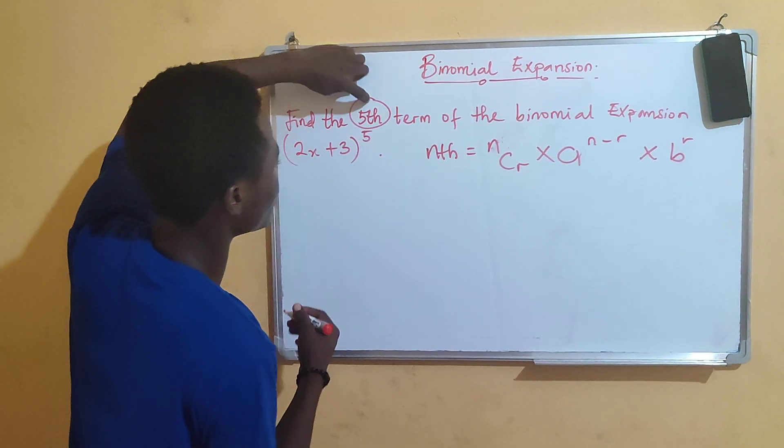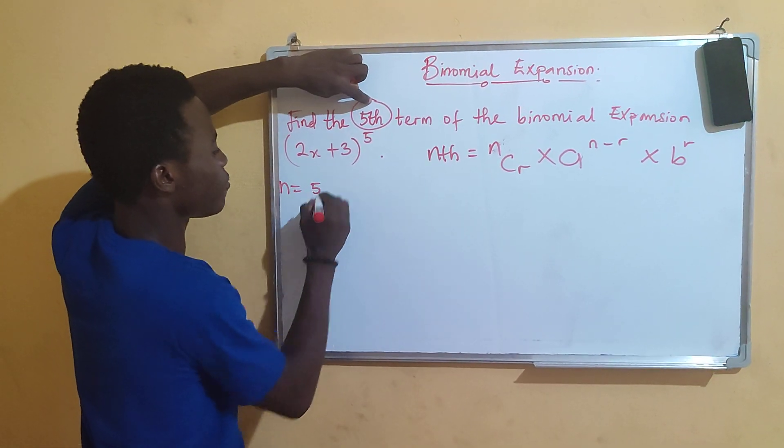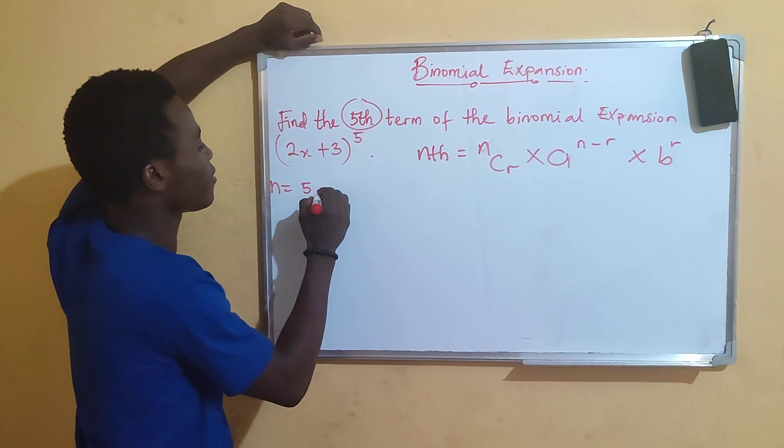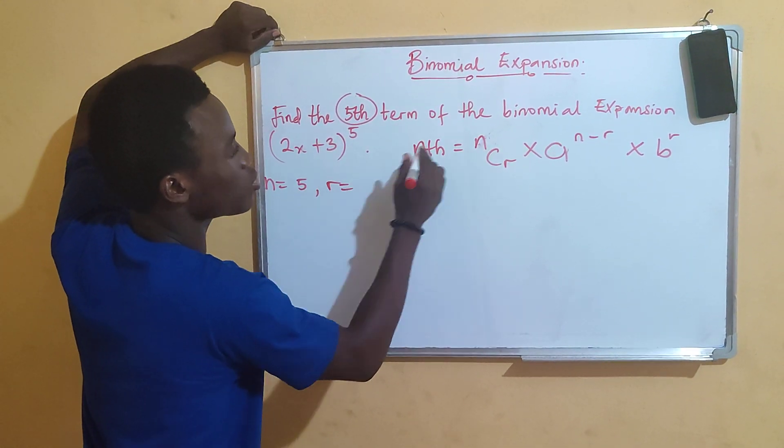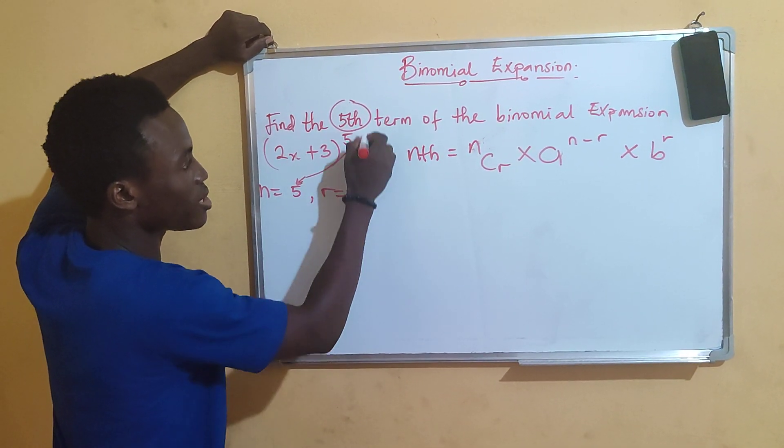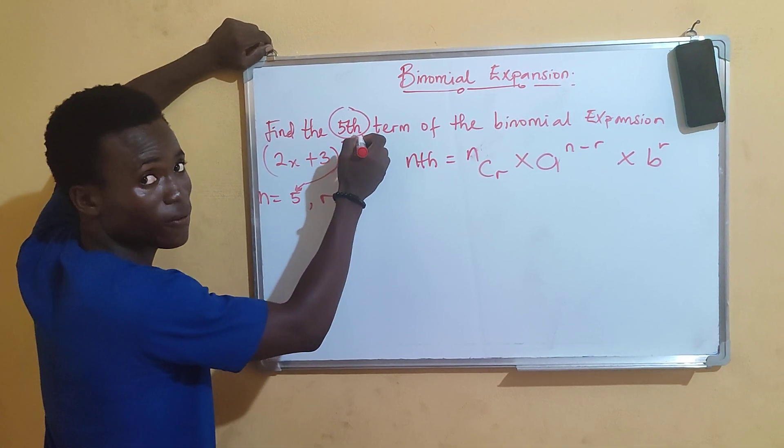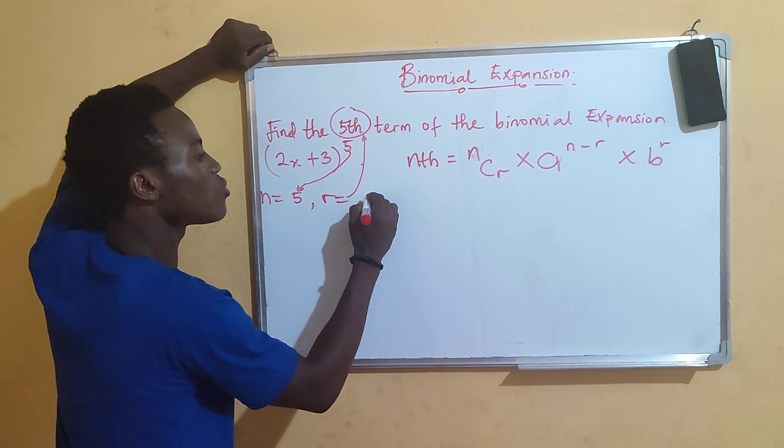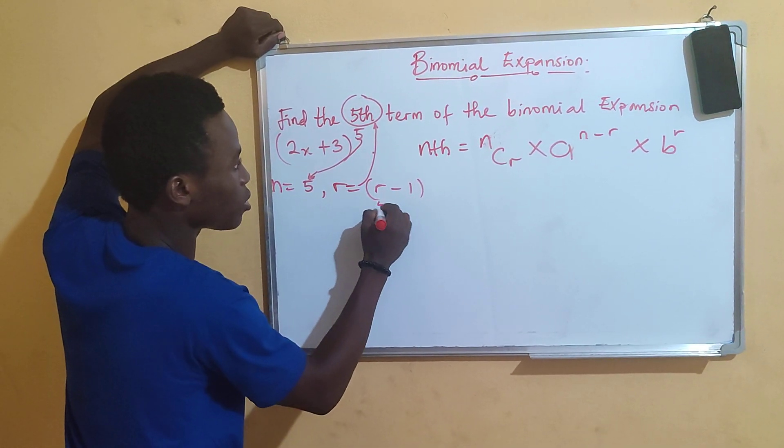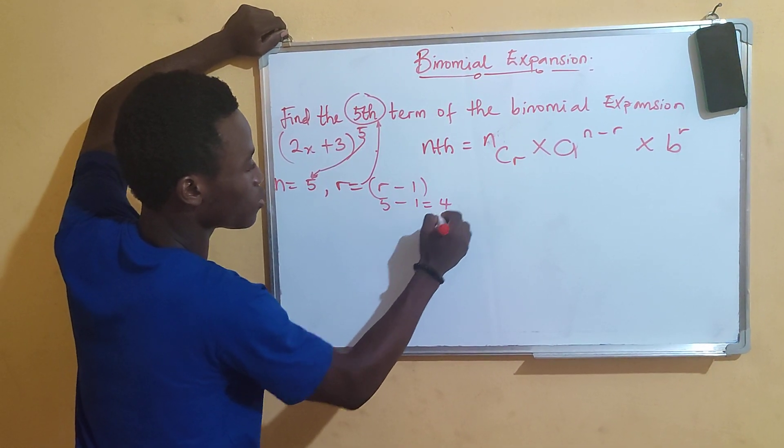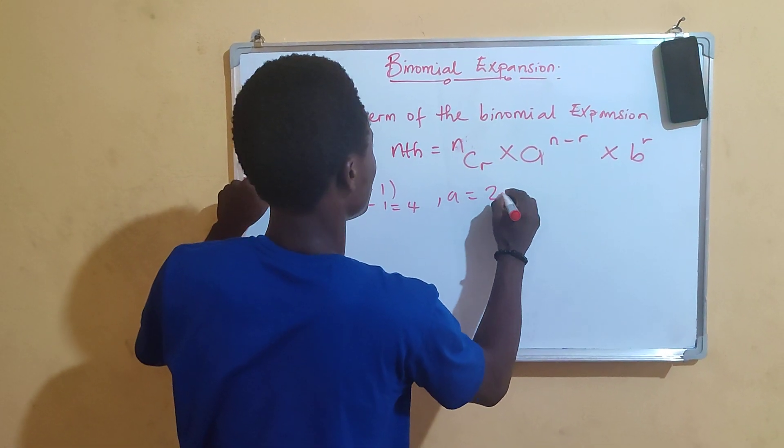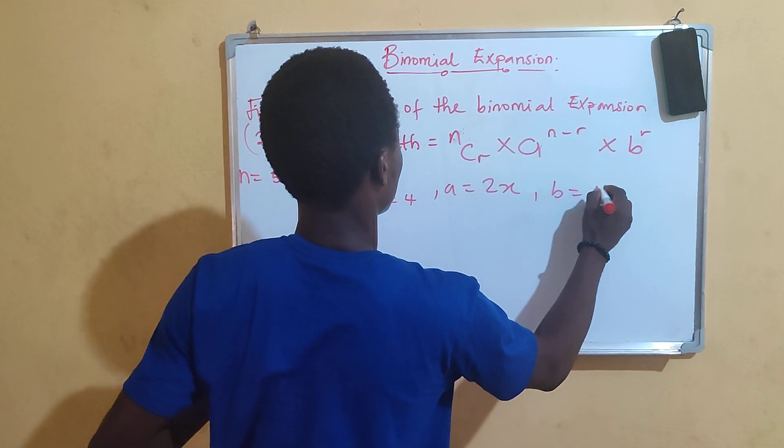Let's list out our parameters. Our n is equals to 5. Then our r is equals to r minus 1. For us to get this, our r, which is 5 minus 1, which equals 4. That means our r is equals to 4. Then our a is equals to 2x and our b is equals to 3.